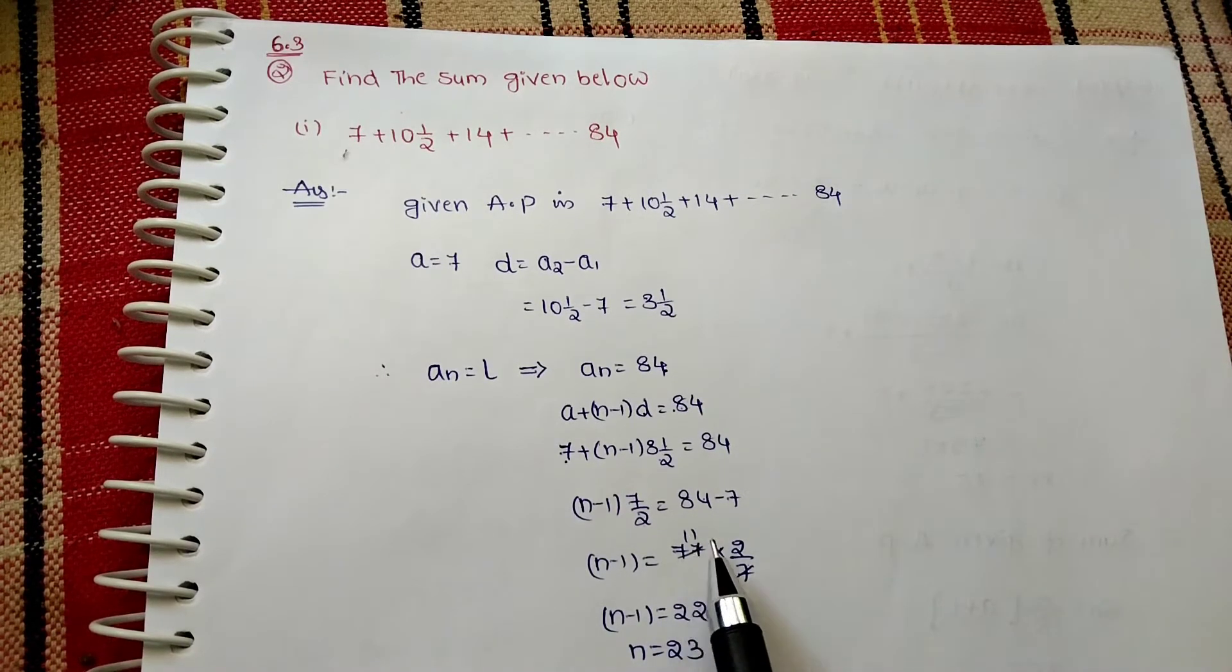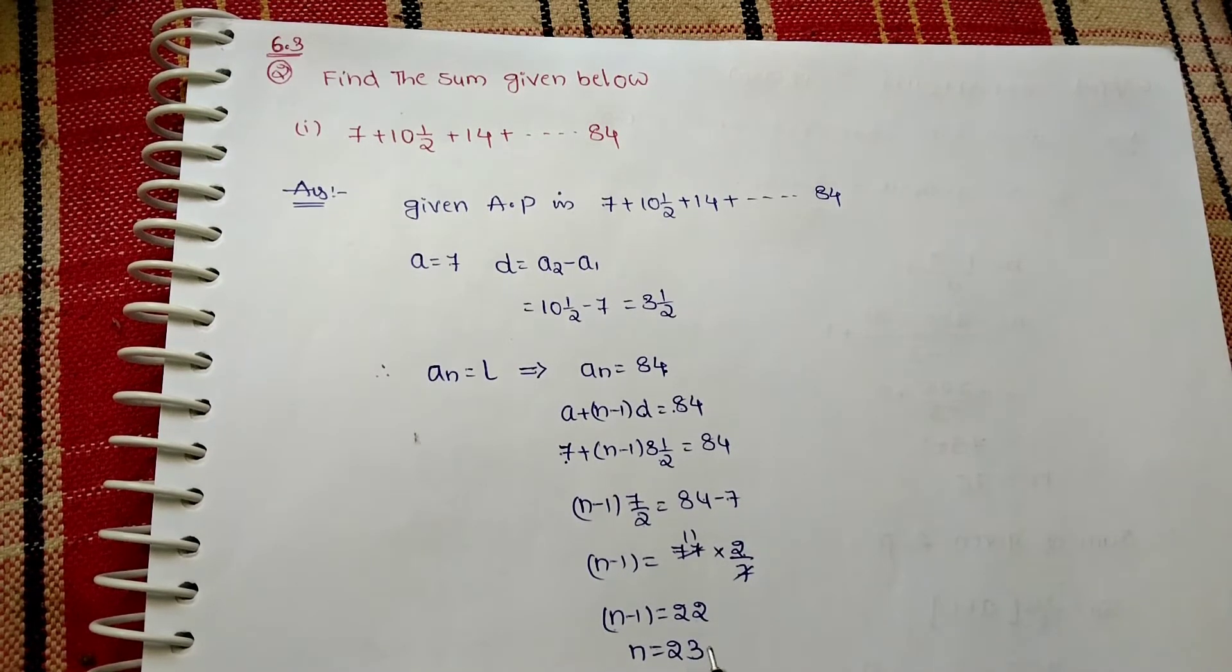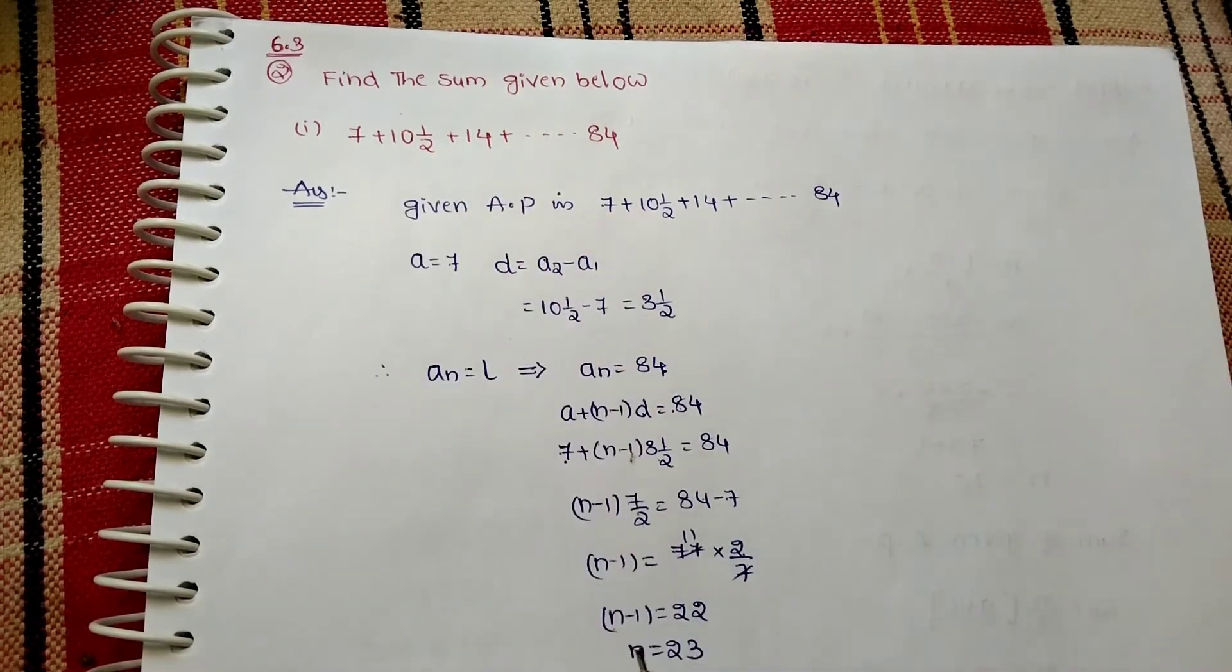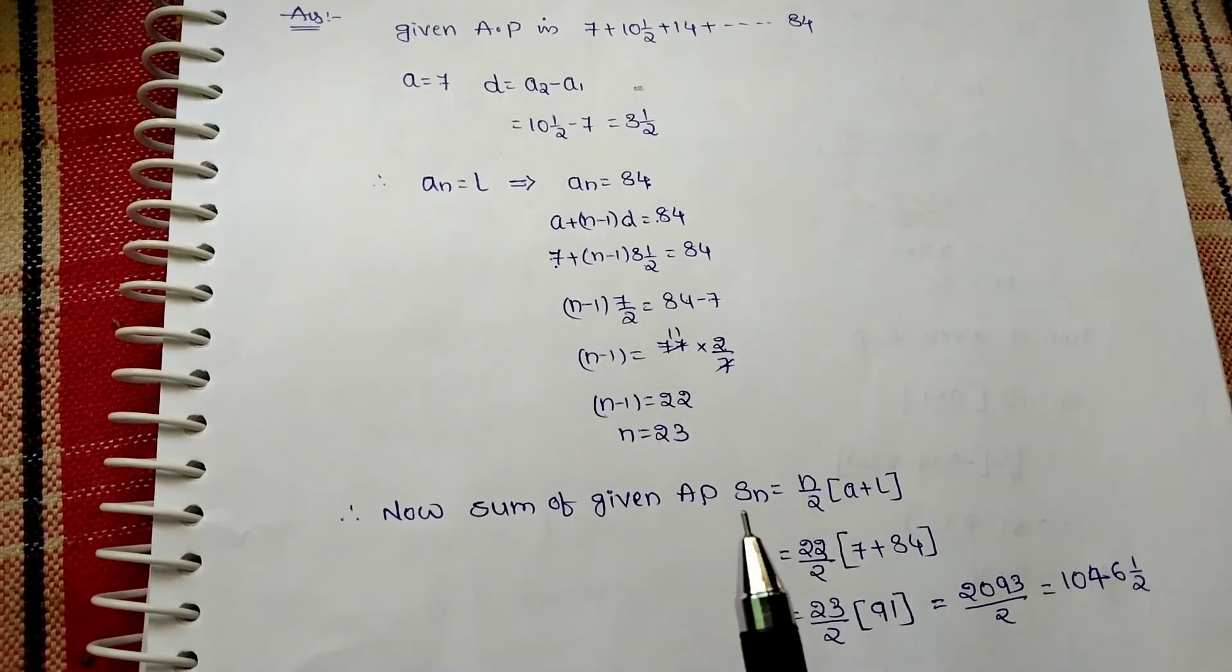7 ones are 7, 11 ones are 11, 2s are 22. Now n equals 22 plus 1 equals 23. In this given AP, we have 23 terms, right?